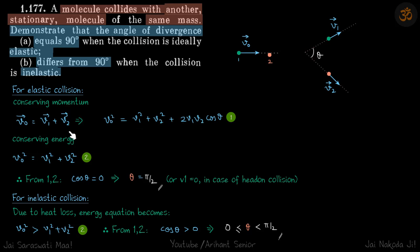The second energy equation will differ as the initial energy will be greater than the final energy due to heat loss, which means v0 square must be greater than v1 square plus v2 square. Now again, if you compare this first equation with this second equation, you will see cos theta must be greater than zero.